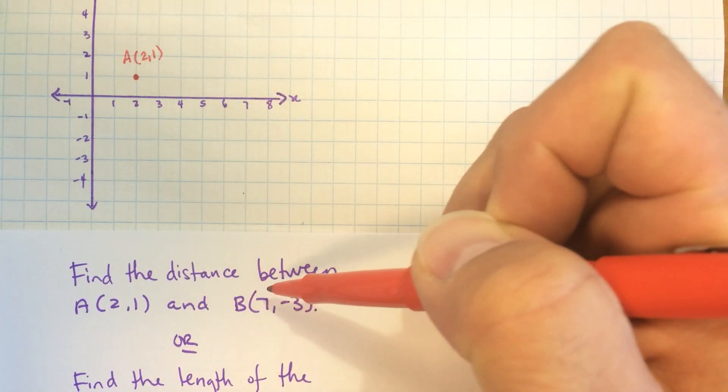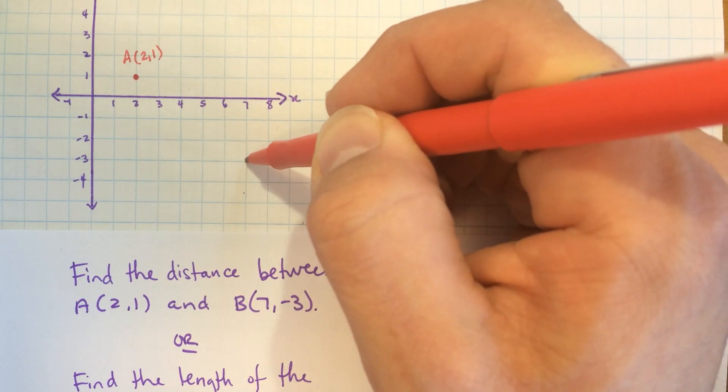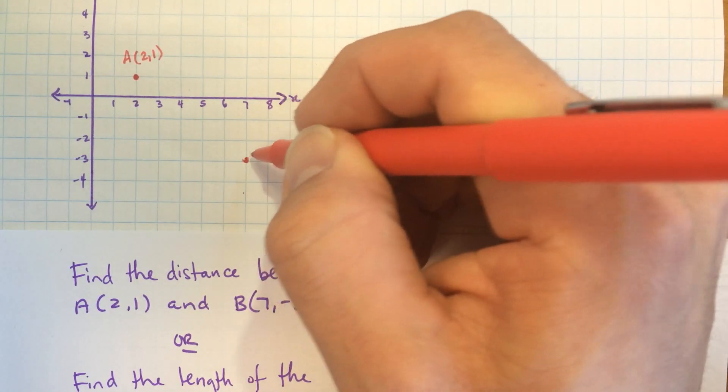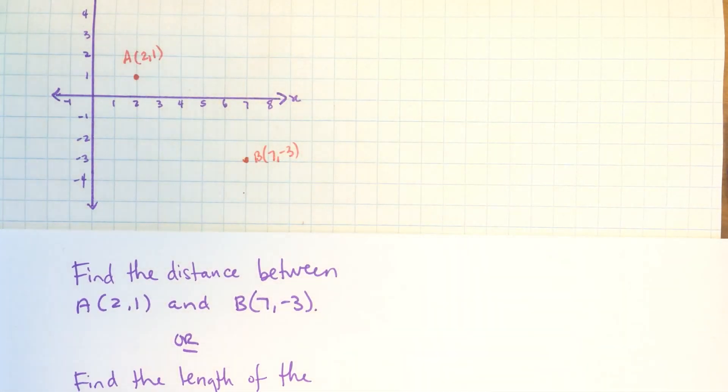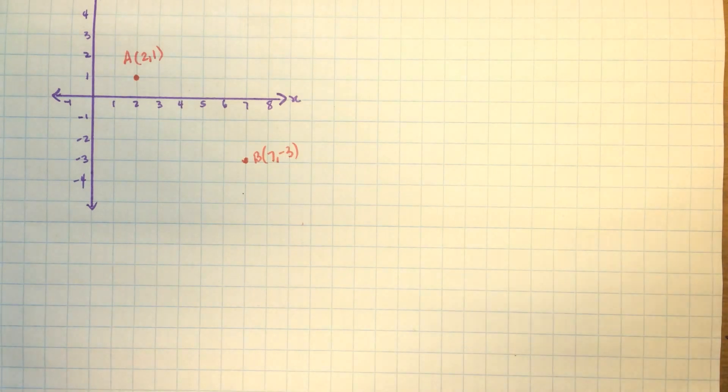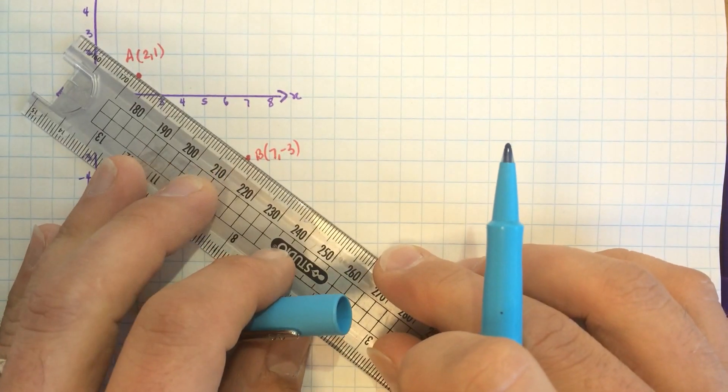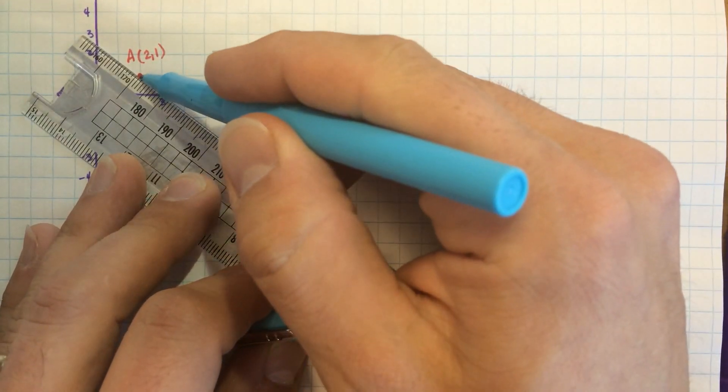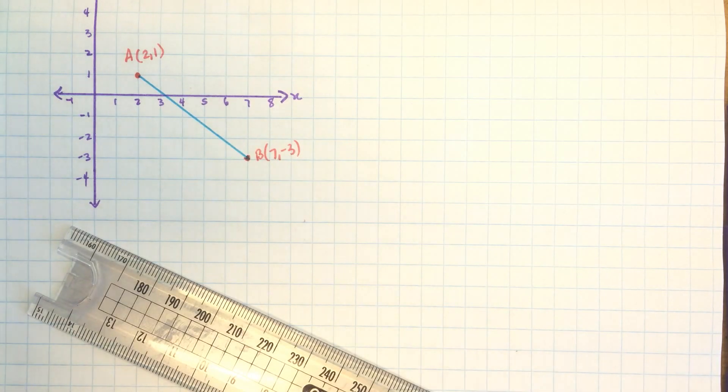And then let's also plot point B, which is 7,-3, across here to 7 and then down to negative 3. That's the point B, 7,-3. Okay, let's connect these into a line segment, and we're going to find the length of that segment. If I can get this ruler. Okay, so there's the segment, which is a part of a line. Lines continue infinitely in both directions.